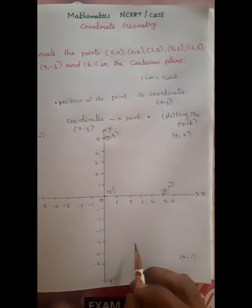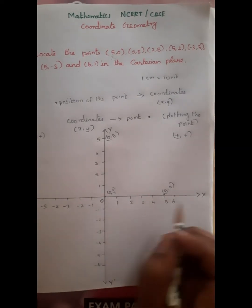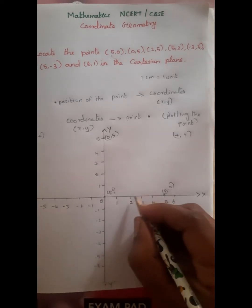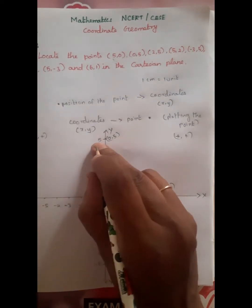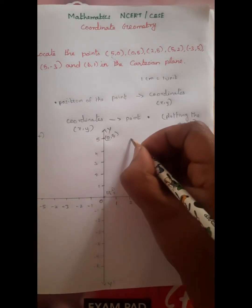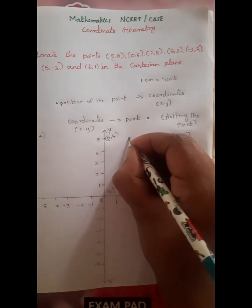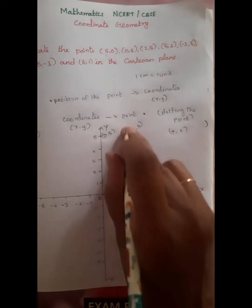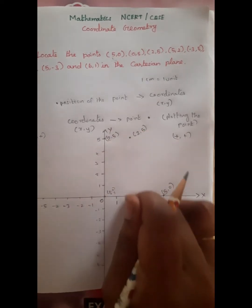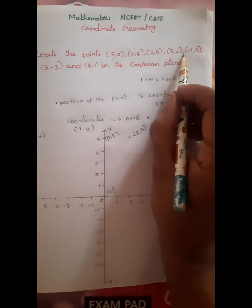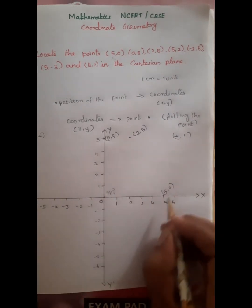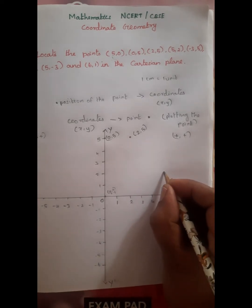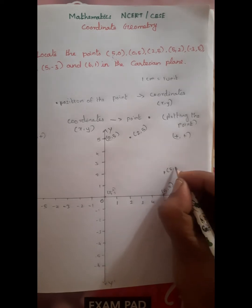Next is (2,5): x-axis is equal to 2 and y-axis is equal to 5. So x equals 2 and y equals 5. We locate this point by going 2 units along the x-axis and 5 units up the y-axis, giving us the point (2,5).